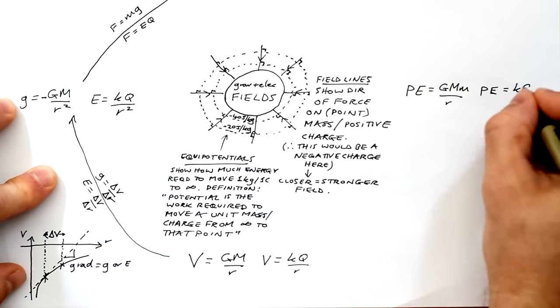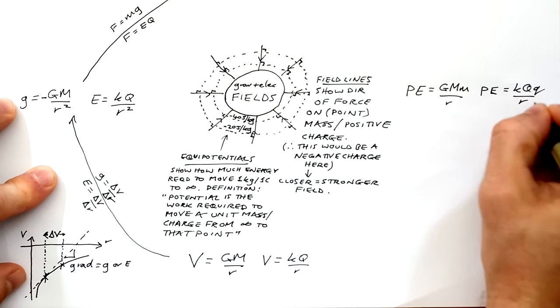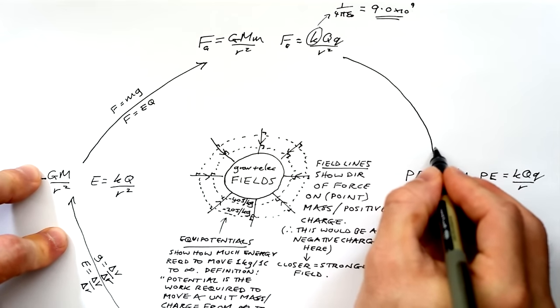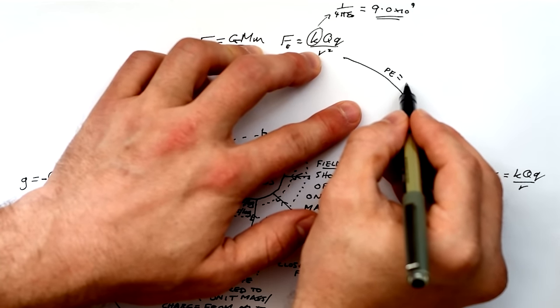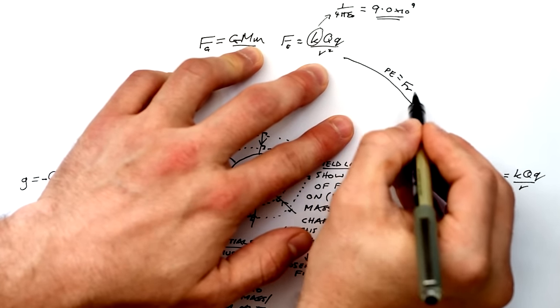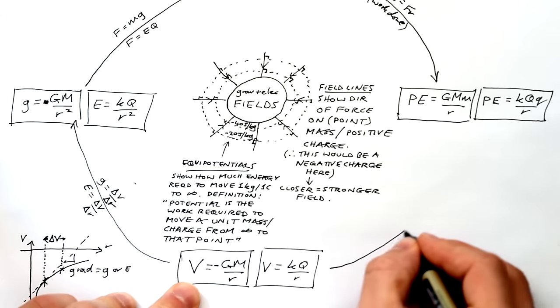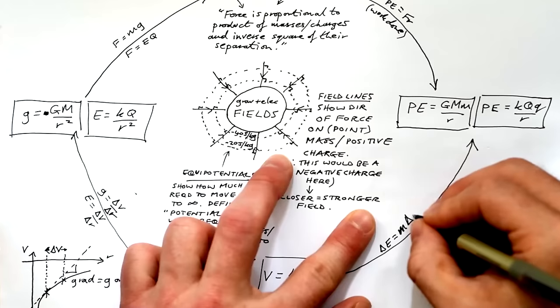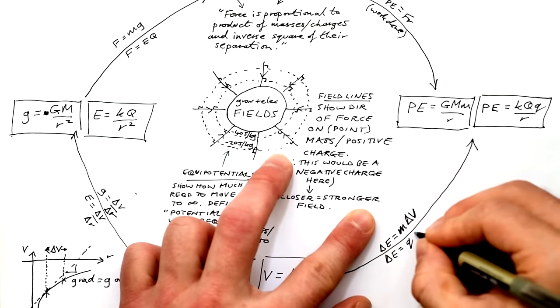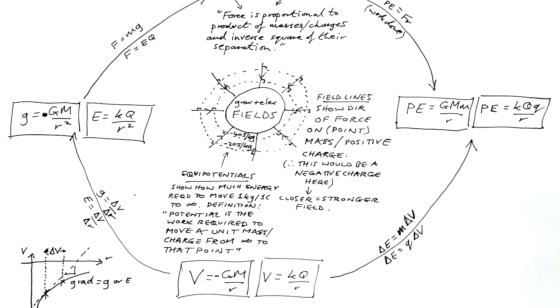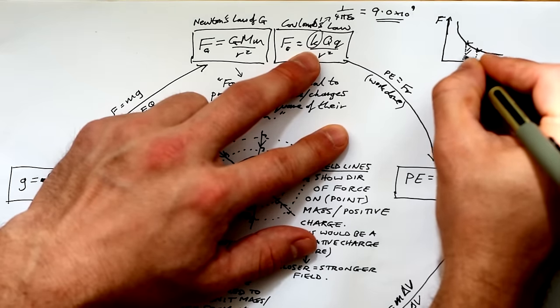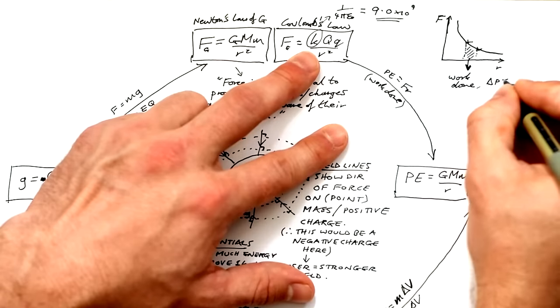Potential energy for a gravitational field is GMm over r, and for an electric field kqq over r — the only difference from the force equations is multiplying by distance, consistent with work done equals force times distance. To get from potential to energy, multiply the change in potential by the mass or charge being moved, because potential is joules per kilogram or joules per coulomb. If you have a graph of force against distance, the area under the graph gives the change in potential energy.